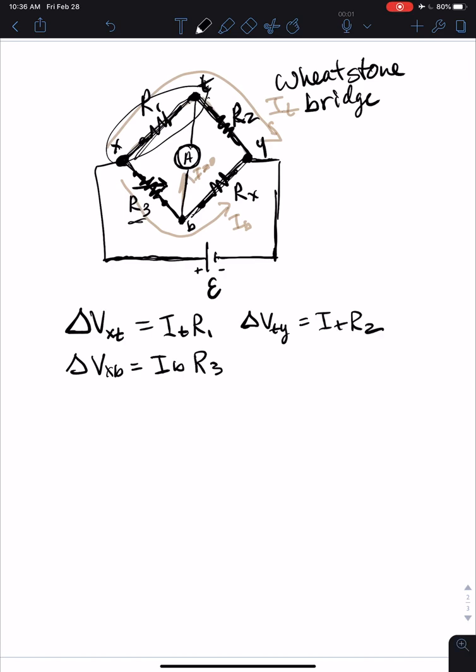Again, the current between, the current in one is the same as the current in two because they're in series. And the current in three and x is the same because they're in series. And then the potential difference for bottom and y is the bottom current times the one we don't know.